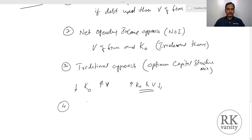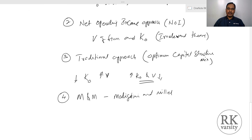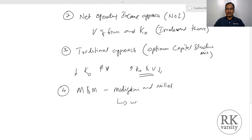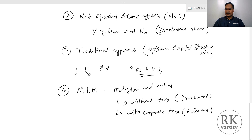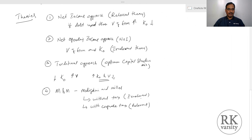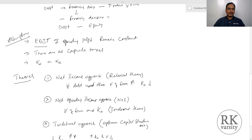The fourth theory is popularly known as M&M — the Modigliani and Miller approach. Modigliani and Miller propose two different theories: one without corporate tax and another with corporate tax. Without corporate tax it is similar to the irrelevant approach, and with corporate tax it is relevant. Their hypothesis is that debt which a company borrows carries an advantage of tax benefit, also called a tax shield, and because of this tax shield the value of the firm may increase. These are the four theories to be discussed in capital structure, each sharing the same core assumptions with one or two additional assumptions specific to each theory.